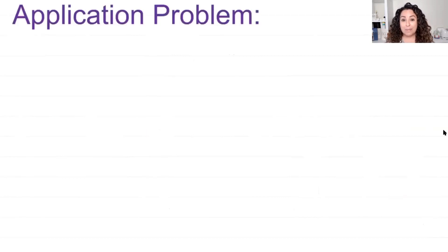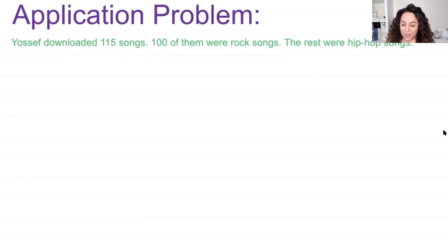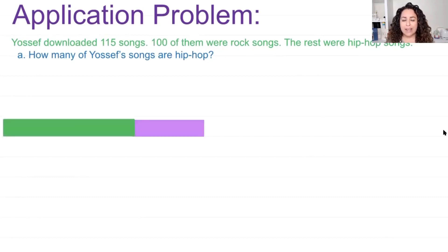Let's take a look at our application problem. Yosef downloaded 115 songs. 100 of them were rock songs. The rest were hip hop songs. Question A, how many of Yosef's songs are hip hop? I'm going to use a tape diagram for that. I'm going to cut it into two pieces. Since 100 of them are rock songs and we're trying to figure out how many are hip hop songs, the bigger piece of tape is going to go to my rock songs. So I know that I have 115 songs total, and part of them are rock songs and that number is 100.